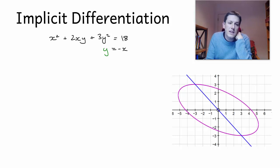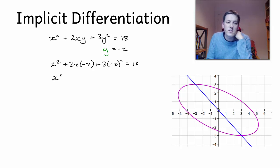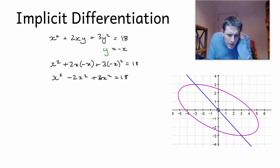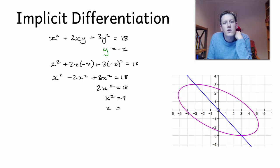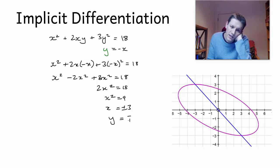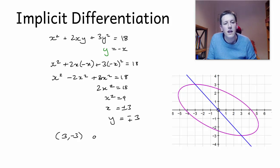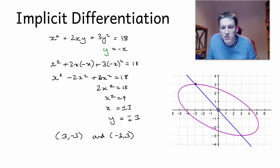So I'll substitute y equals minus x into the original equation. I get x squared plus 2x times (minus x) plus 3 times (minus x) squared equals 18, so x squared minus 2x squared plus 3x squared equals 18. That gives 2x squared equals 18, so x squared equals 9, meaning x equals plus or minus 3. And since y equals minus x, y will be minus or plus 3 respectively.